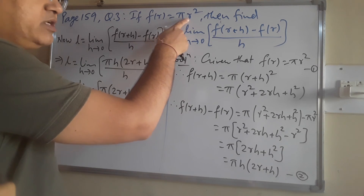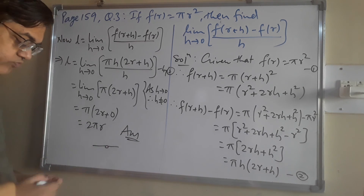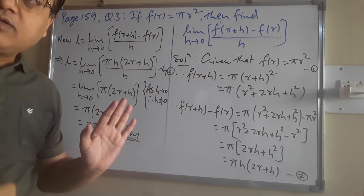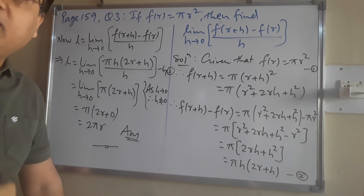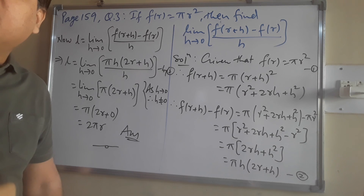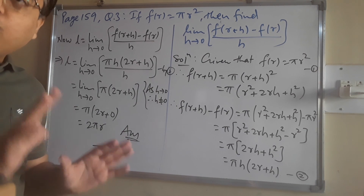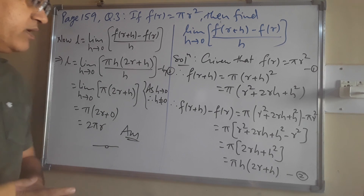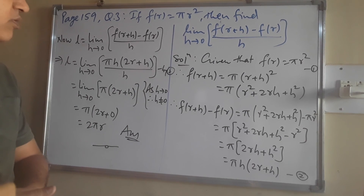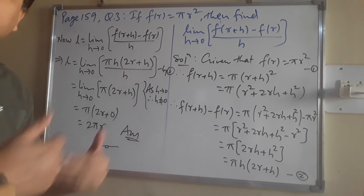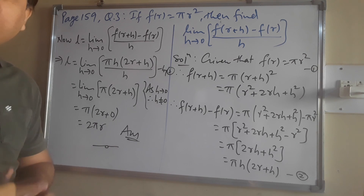So when f(r) = πr², evaluating by this pattern gives the final answer 2πr. Such expressions will appear in the next chapter. When we evaluate a limit in this way, it is called the first principle of derivative, which we will study in detail in the next chapter. With this problem, we can say differentiation has begun — that will be our next chapter. These were some problems; doubtful questions got solved. Take care, bye bye, Jai Ganit.